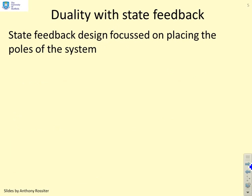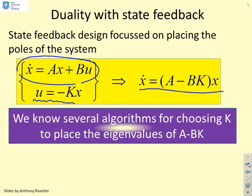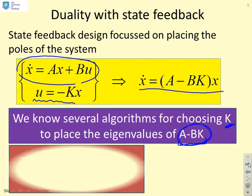We're going to look now at duality with state feedback. If you go back to the videos on state feedback design, which was based on placing poles, what we said is if you had an underlying system x dot equals Ax plus Bu, and you added a state feedback u equals minus Kx, then you get a closed loop system x dot equals A minus BK times x. And we showed several algorithms for choosing K such that you could put the eigenvalues of A minus BK wherever you wanted them to be.